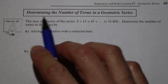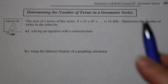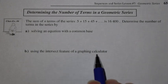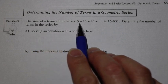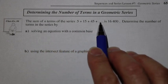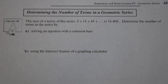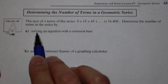We are looking at determining the number of terms in a geometric series, and determining the number of terms can be a difficult task, but we're going to tackle this. We have a sum of n terms of the series 5 plus 15 plus 45, with more terms in the middle, and then 16,400. Let's determine the number of terms by using two methods.